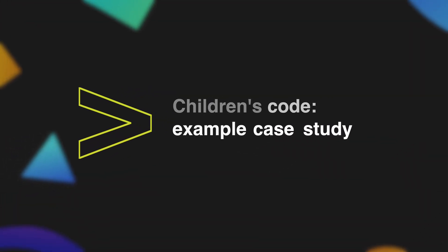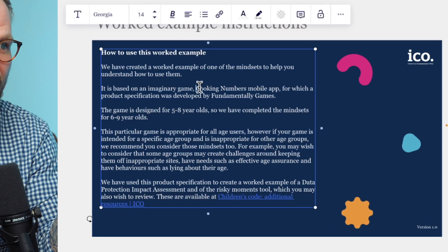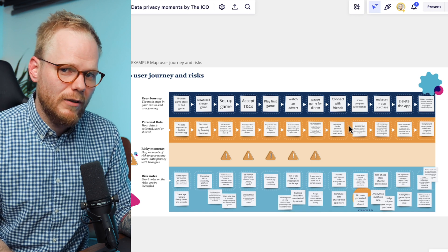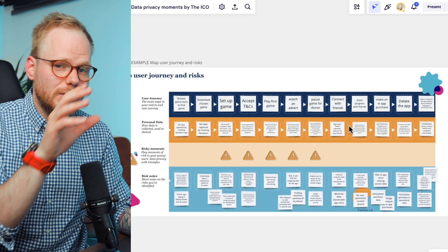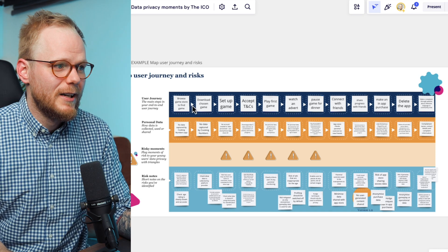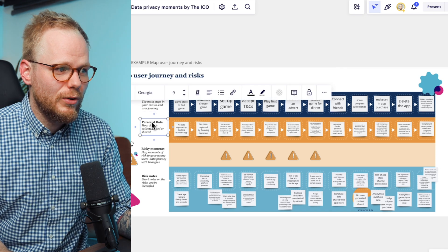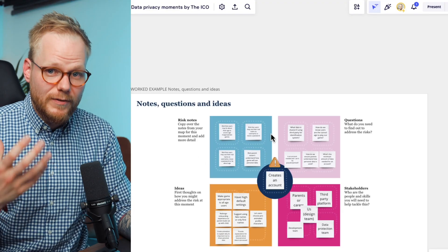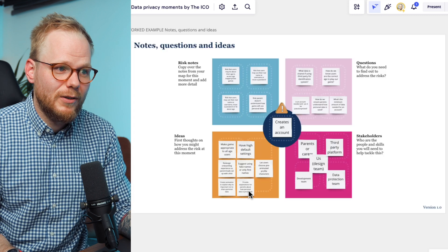To better illustrate, they created an imaginary case study with a Cooking Numbers mobile app, showing exactly how to do it at a high level. Of course your journey mapping and research efforts could look very differently. What matters is highlighting what you should be capturing in terms of journey steps, risky moments, and risk notes, and creating a strategy plan for the team to ideate further and solutionize.